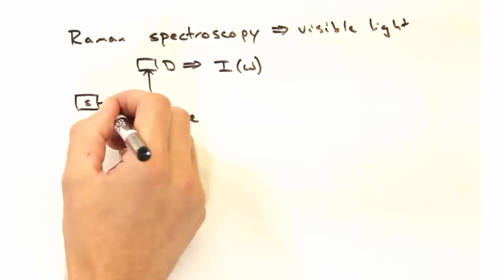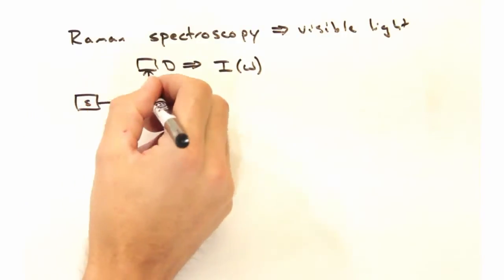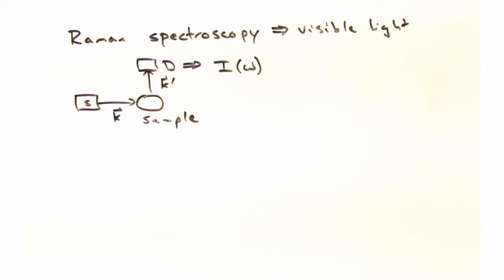Then we're going to put a detector off at 90 degrees from that, and the detector is going to be a frequency dependent detector, which is to say what I'm calling D actually has a splitter in it that separates out all the frequencies spatially.